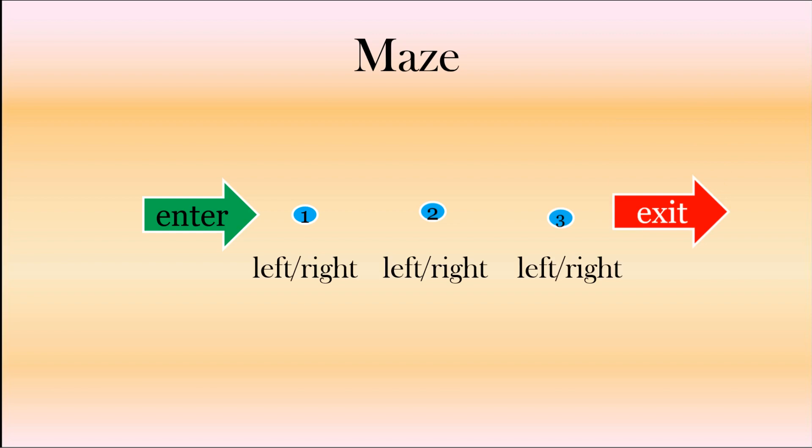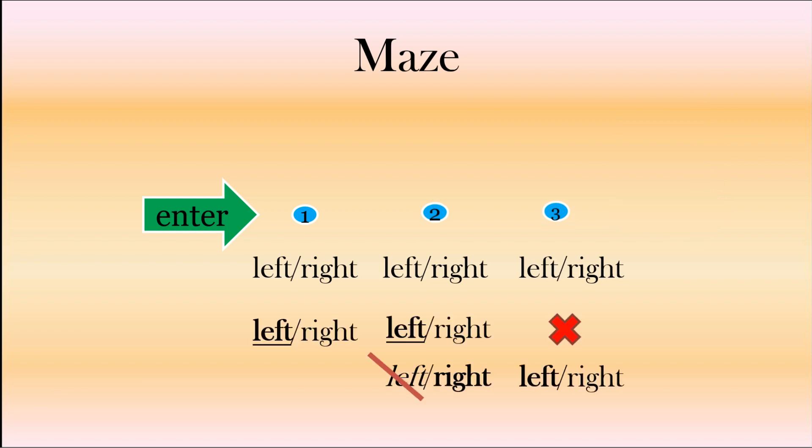So we choose left, then left again, then we get blocked, it's a dead end. So we go back and choose right, and then left again, and then we come out of our exit. So let's have a look at our data structures.